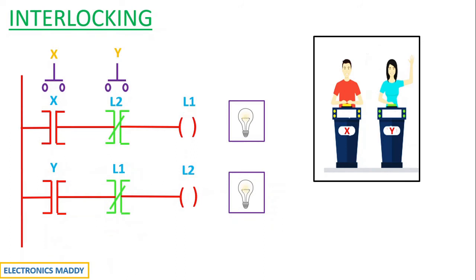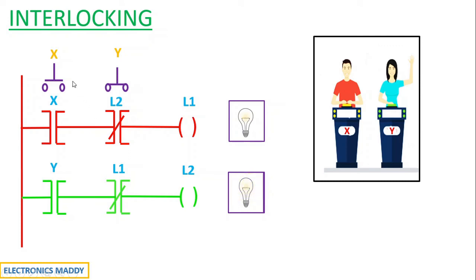Similarly, if Y first knows the answer and presses the push-button switch, the coil Y gets energized, the rung corresponding to Y gets energized, and the light glows for L2. Once L2 is energized, the contact corresponding to L2 in the rung for X becomes de-energized and acts as an open circuit, because it was a normally closed contact. So now even if X presses after Y, the contact of X gets energized, but no current flows through that path because L2 is acting as an open circuit, and L1 is not energized.